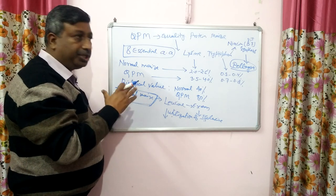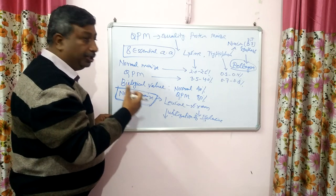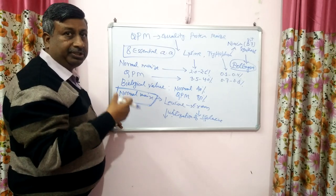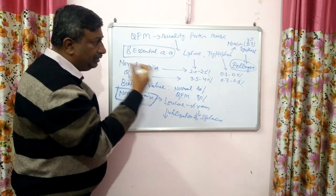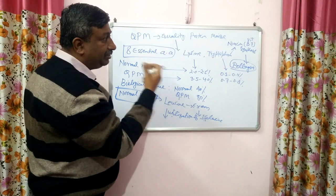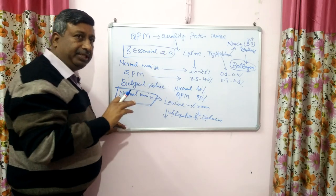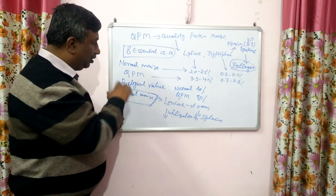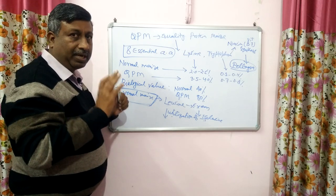The answer is pellagra. This happens because lysine and tryptophan are already less in normal maize, leucine is high, isoleucine utilization is poor, tryptophan is less for niacin biosynthesis — and therefore pellagra disease occurs. This is the reason that normal maize causes pellagra disease.